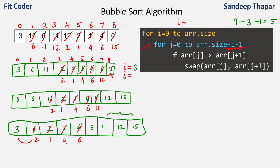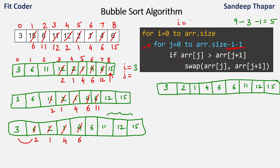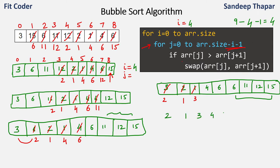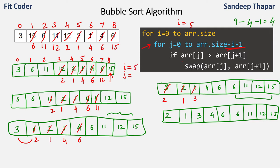After that step, i becomes 4 and we run the inner loop from 0 till 4. The last four elements are in the correct position, so we just need to compare the first five elements. We compare 3 and 2 — swapped: 2 comes at the start and 3 comes instead of 2. Then 3 and 1 — again swapped. Then 3 and 4 — in the right order. Then 4 and 6 — also in the right order. Then i is 5 and we run the inner loop from j equal to 0 till 3, comparing the first four elements. We compare 2 and 1 — swapped. Then 2 and 3 — right order. Then 3 and 4 — right order.